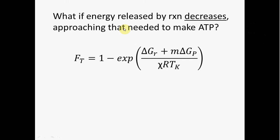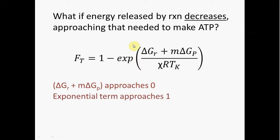On the other hand, what if the energy released by the reaction decreases and approaches that necessary to make ATP? In this case, the numerator for this exponential term decreases and it approaches a value of zero. When that happens, this exponential term approaches a value of zero, and as a result, the thermodynamic potential factor decreases. When that happens, the rate of the reaction would then also decrease. So whatever you get when you multiply these Monod factors together, when you take into account the thermodynamic controls, the rate that you calculate there would have to decrease.